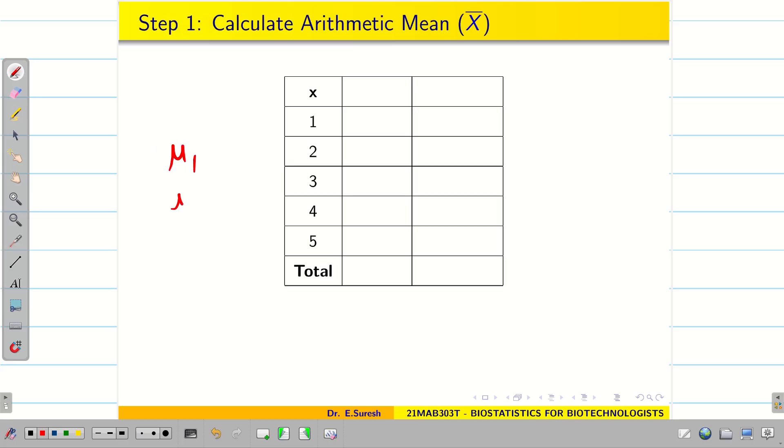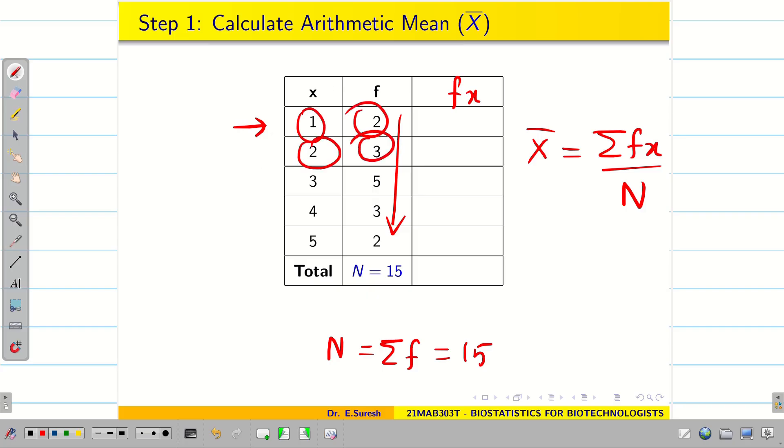To find mu1, mu2, mu3, mu4, very important thing, we need n and x bar. Because we are going to find the central moment. So write f. Adding this, we will get capital N that is summation of f equals 15. Next we have to find fx because x bar is summation fx by capital N. Here the problem is very simple. But in exams, when you solve, you may have big numbers in x and f. So we can use calculator.